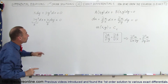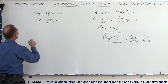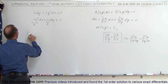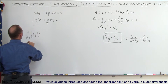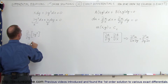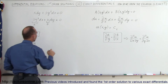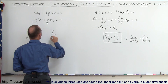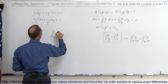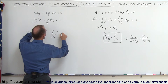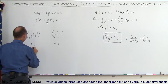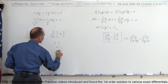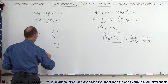Let's take the partial derivative of A with respect to Y and see what we get. The partial derivative with respect to Y of A, where A is 3y², equals 6y. Then we take the partial derivative with respect to X of B, where B equals x, and that derivative equals 1.